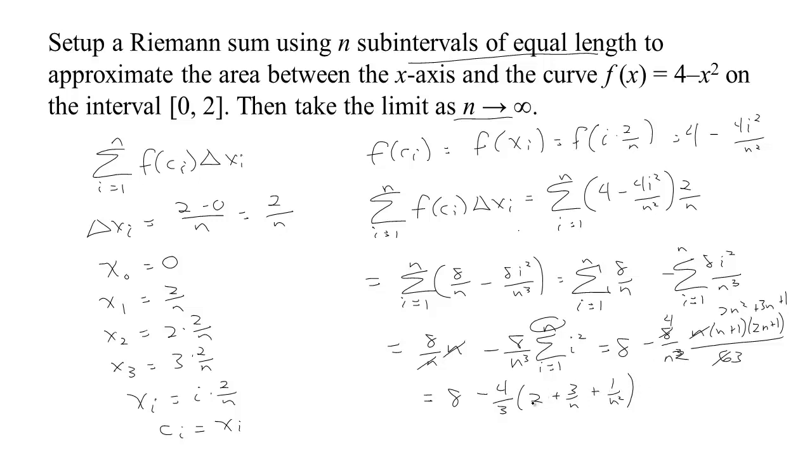Now what do we get? We know this is only an approximation, but what do we get as we slice finer and finer? Well, if we take the limit as n tends to infinity of this: 8 minus 4/3 times (2 plus 3 over n plus 1 over n²).